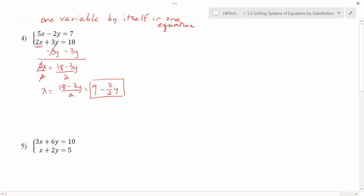I'm going to use this version of it. Notice here, I got the x by itself, and I got the x by itself in the second equation, so I'm going to need to plug this value in for x in the top equation. It's really important that you plug it into the different equation than what you started with. So in this case, I'm going to have 5 times, instead of x, I'm going to plug in 9 minus 3 halves y, then minus 2y equals 7.